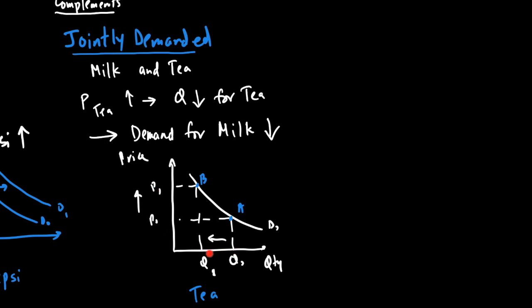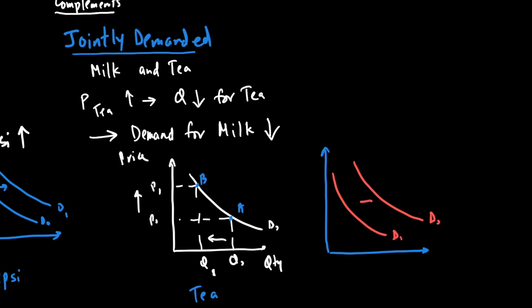As price goes up and I buy less tea, the demand for milk — the complement — falls from D-naught to D-one, so the demand curve shifts backward to the left. In the case of complements: when the price of a good goes up, the demand for the complement falls. Vice versa, when the price goes down, demand for the complement goes up — for example, if tea becomes cheaper I drink more tea and automatically buy more milk.